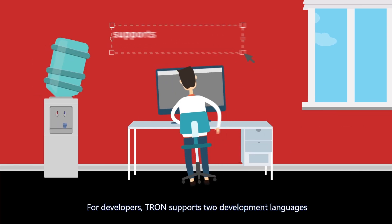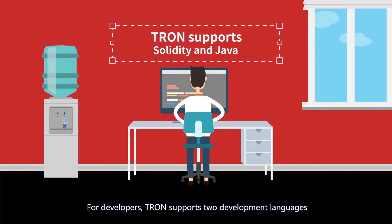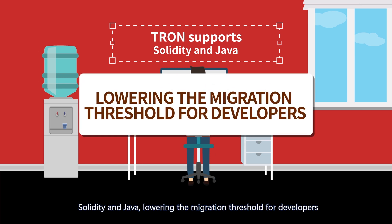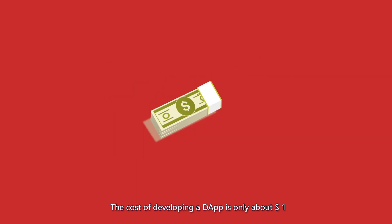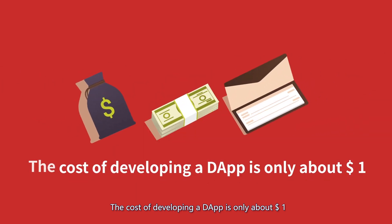For developers, Tron supports two development languages, Solidity and Java, lowering the migration threshold for developers. The cost of developing a DApp is only about $1.